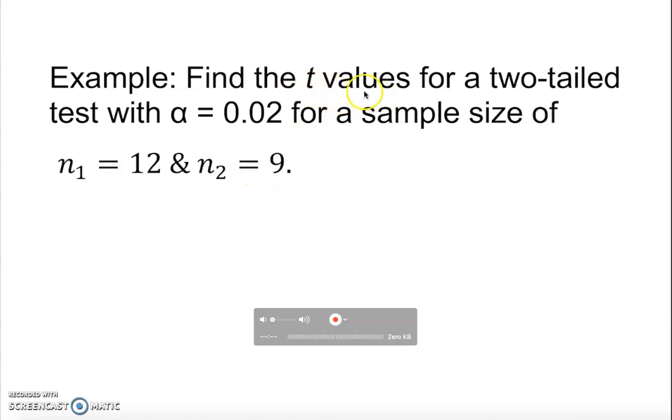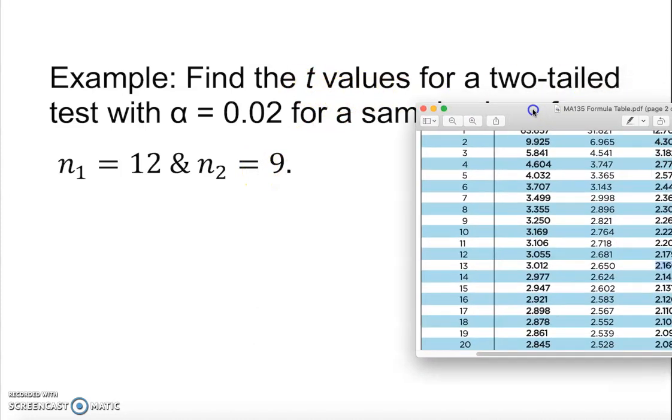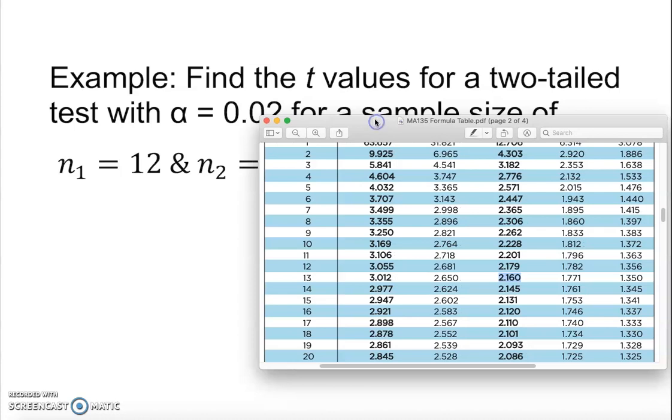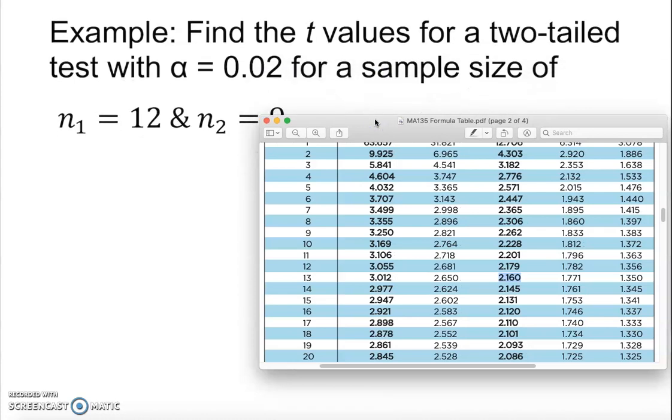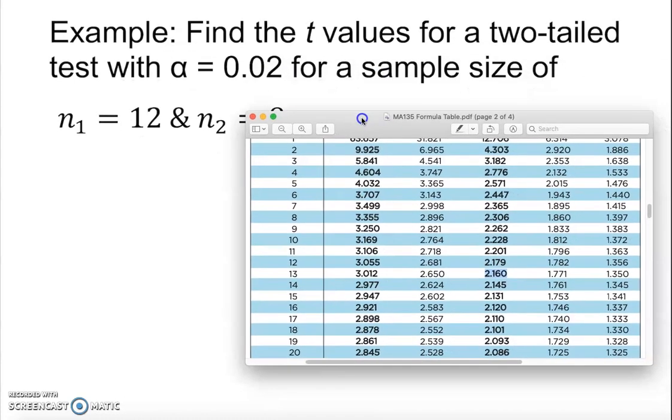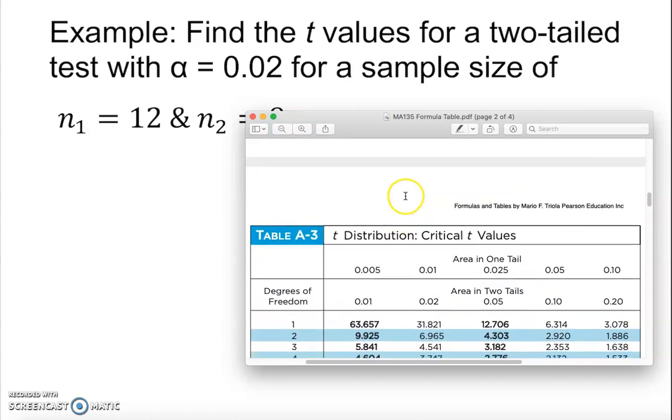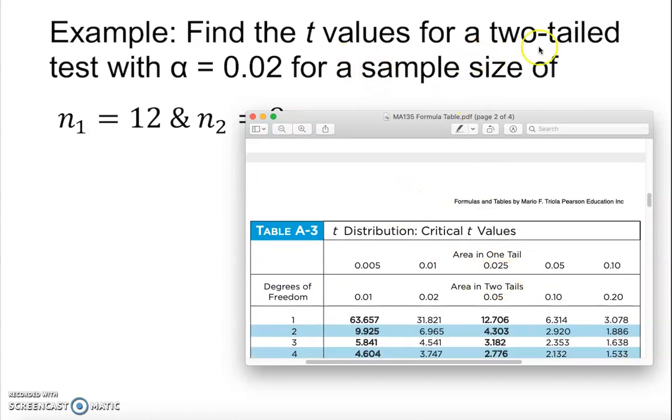So first of all, we pull out the t-table. If you look at the t-table, we clearly see that it's going to be a two-tailed test. This is the two-tail section, and also alpha is 0.02, so we look into this column, alpha equals 0.02.